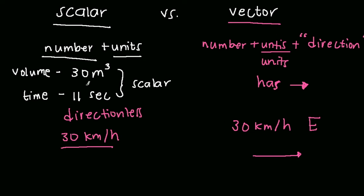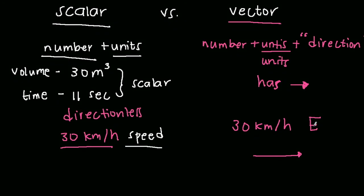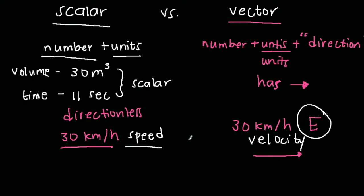That's the main difference between a scalar and a vector quantity. Scalar is directionless; vector has direction. By the way, this also gives you the difference between speed and velocity. 30 kilometers per hour is speed — kilometers per hour is a unit for speed. But if you put direction on a speed, it actually becomes what you call velocity. So speed is a scalar quantity, and velocity, because it involves direction — east, west, north, or south — it becomes velocity.